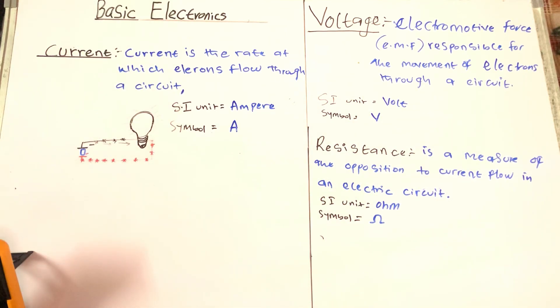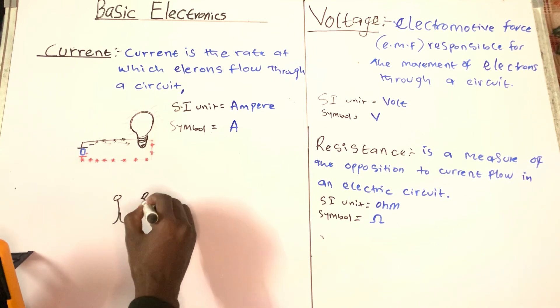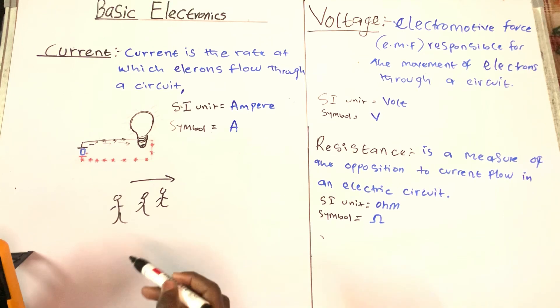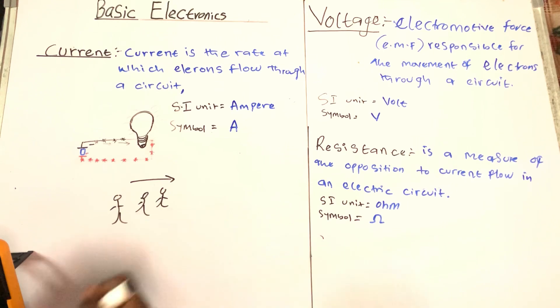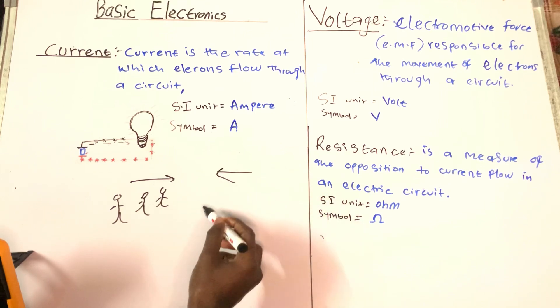Now let me take an example. These are some guys here running, they are running towards here. Now the energy that is making them run, the pressure that is making them run, is voltage. Let's see, these guys are the current. Now there is someone who is going to be wanting to block them from moving towards here, and that person is known as resistance.